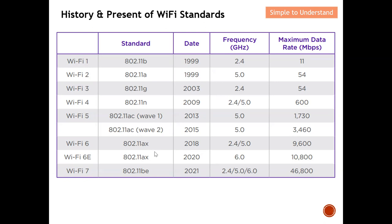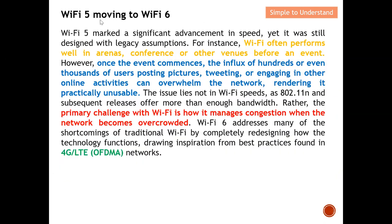Now let me explain why we need to move from Wi-Fi 5 to Wi-Fi 6. Wi-Fi 5 made a significant advance in terms of speed — the throughput and data rate increased. Yet it was still designed with legacy assumptions. For example, Wi-Fi 5 often performs well in arenas, conference venues, or other venues before the event actually starts. However, once the event commences and hundreds or even thousands of users are posting pictures, tweeting, or engaging in other online activities, this can overwhelm the network. The network becomes congested and it becomes impractical to use Wi-Fi 5 anymore.